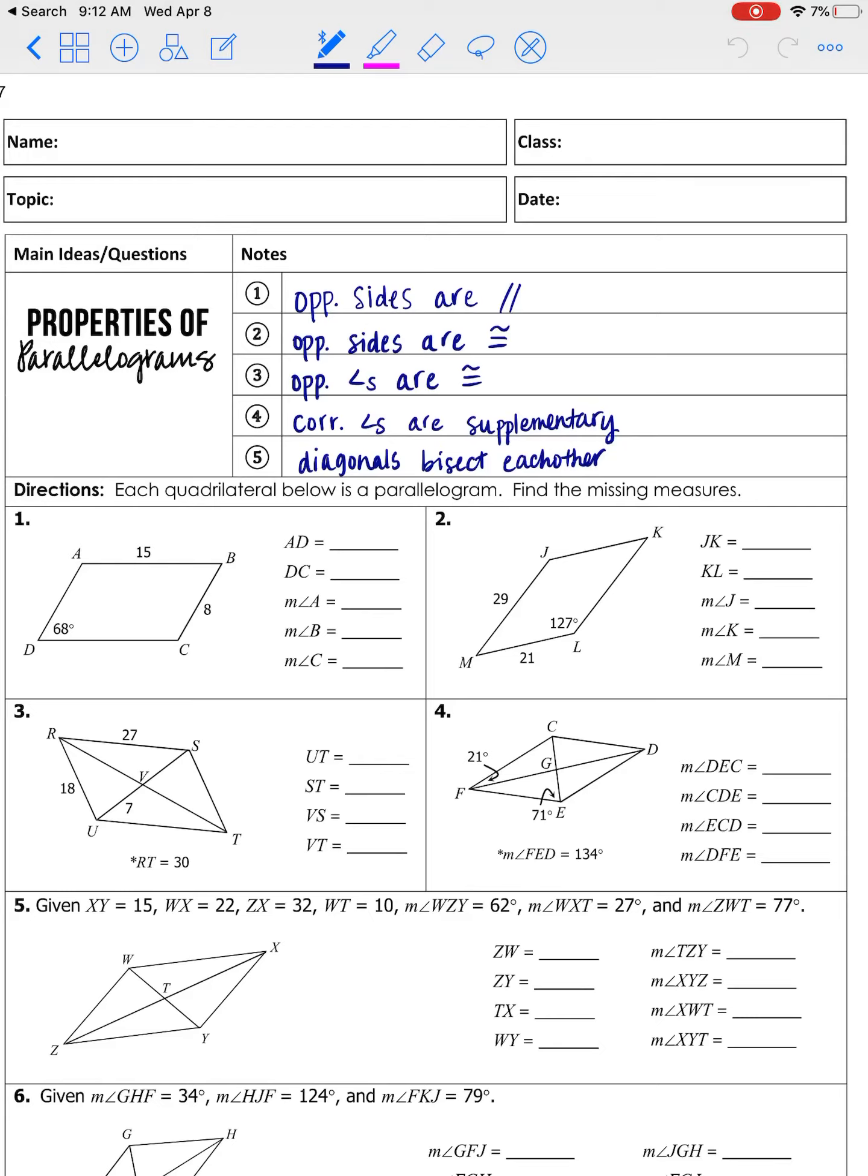So first, opposite sides are parallel. So if we're looking at number one, that's AB. AB is going to be parallel to DC, and then AD is going to be parallel to BC. Additionally, we know the opposite sides are congruent. So opposite sides are both congruent and parallel. Parallel, remember we use the arrows, and congruent. Parallel and congruent.